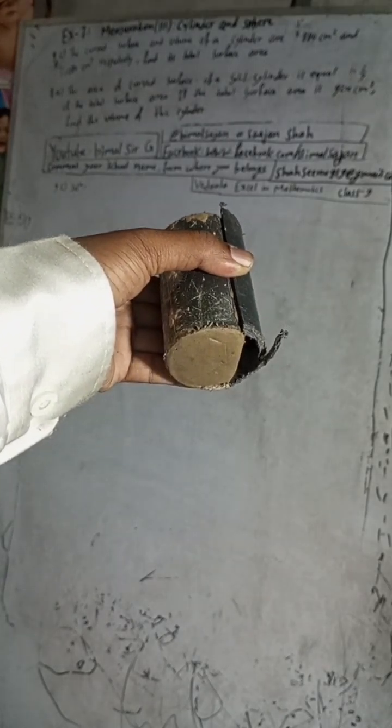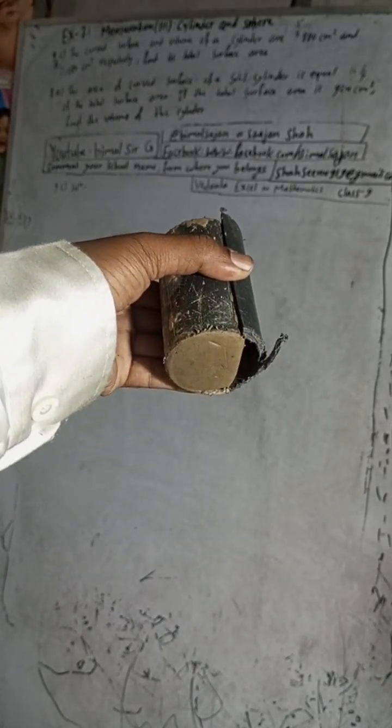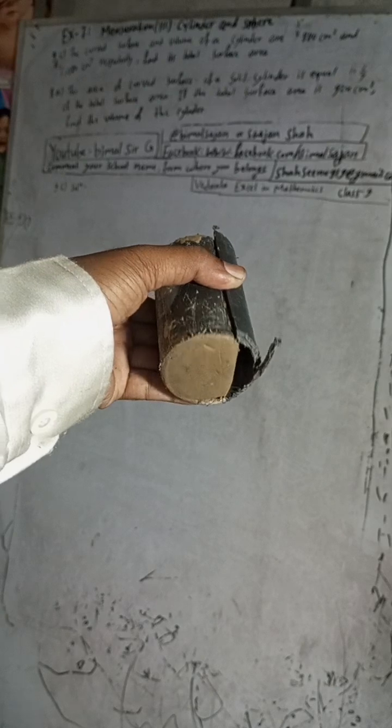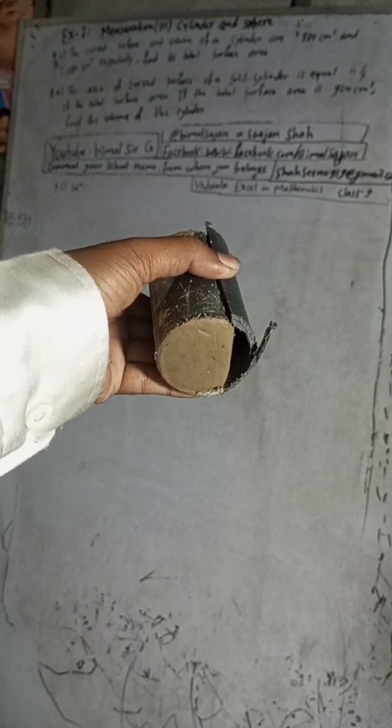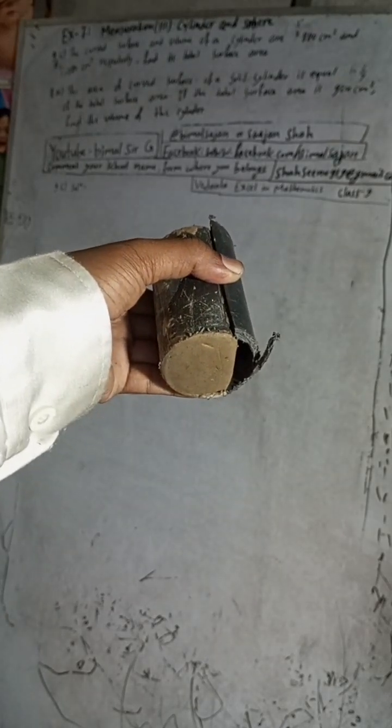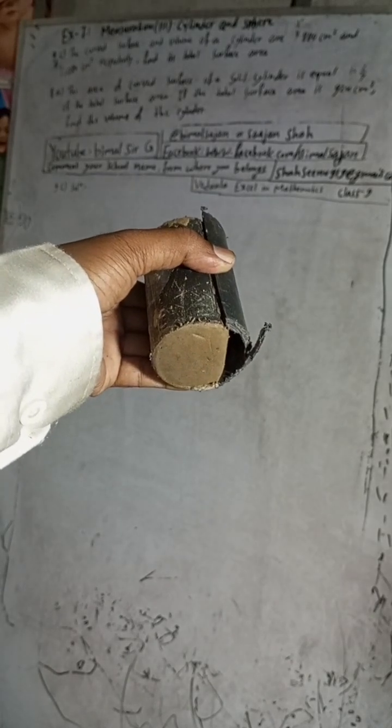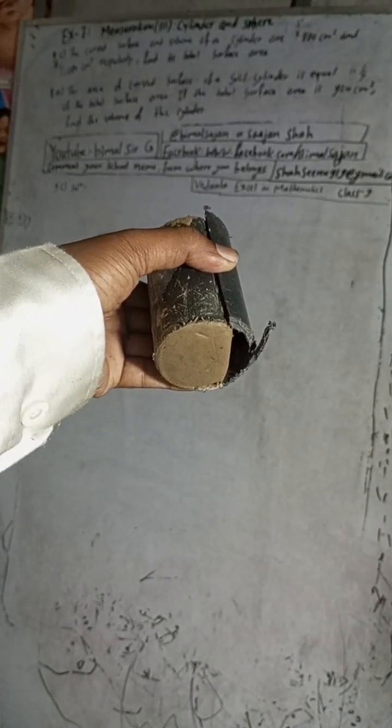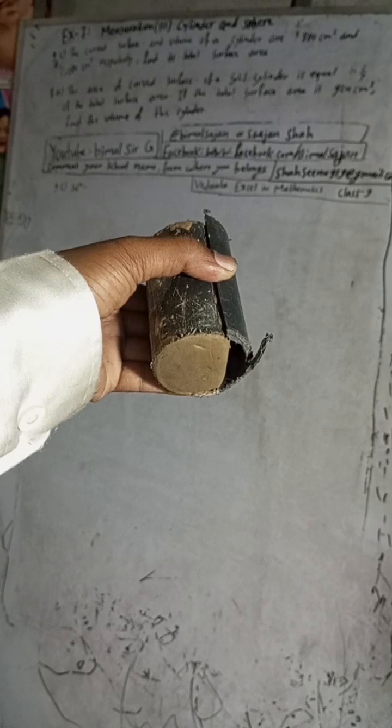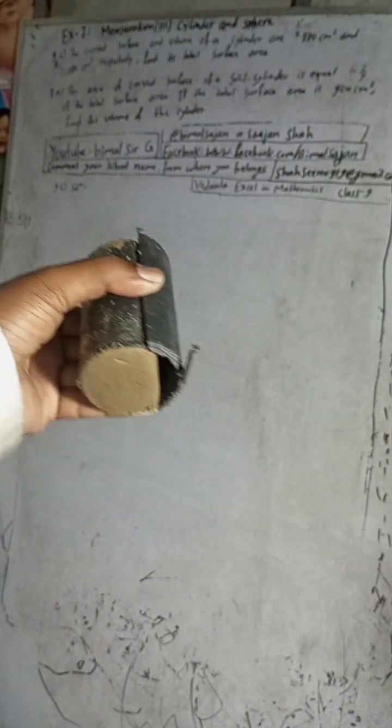This is question number 9c, exercise 7.1, mensuration third part - cylinder and sphere. The question states: the curved surface area and volume of a cylinder are 880 cm² and 3080 cm³ respectively. Find its total surface area.